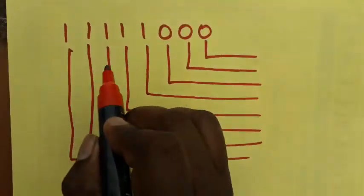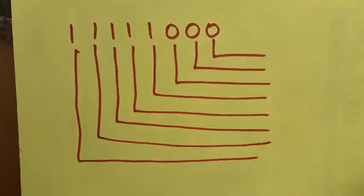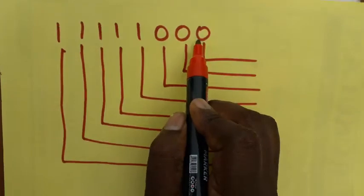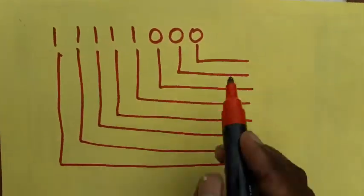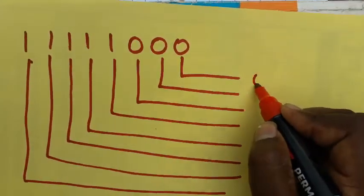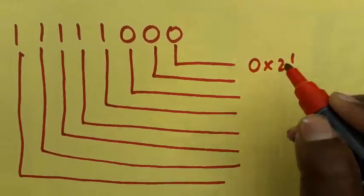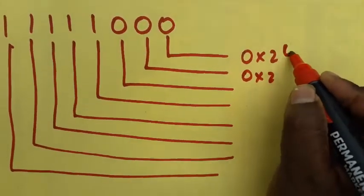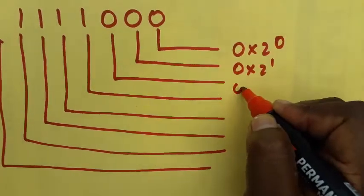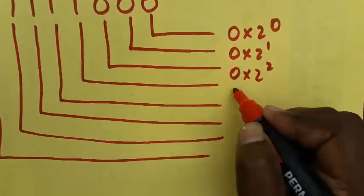I am taking a binary number from backward to forward. The first number will be zero backwards—it's two power one. The second number is zero, two power... First we will start from zero: two power one, zero into two power two, and one into two power three.